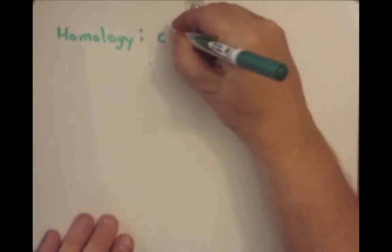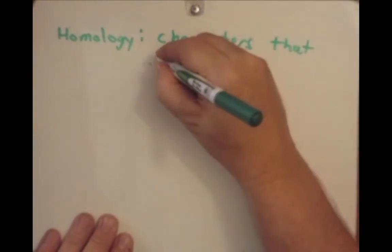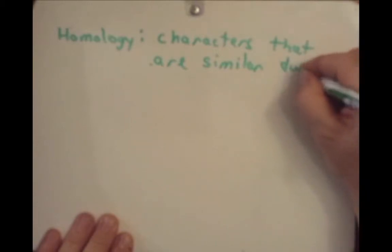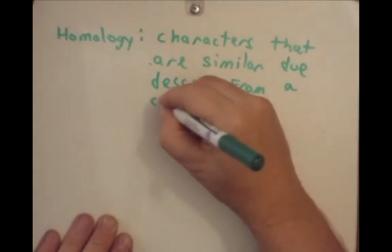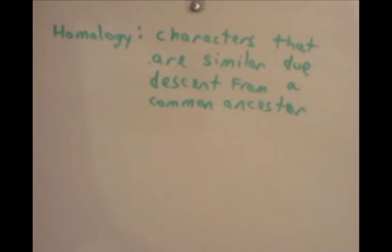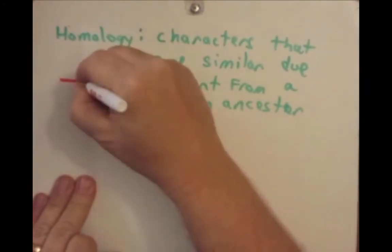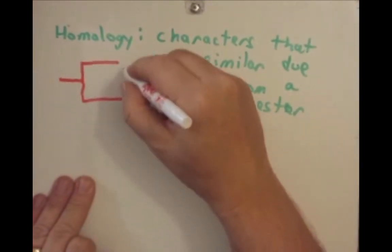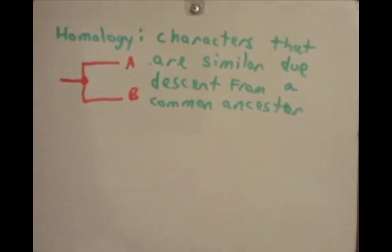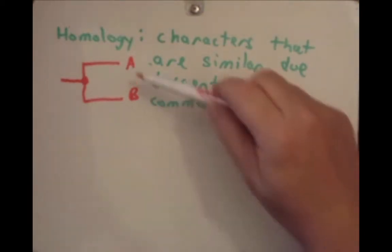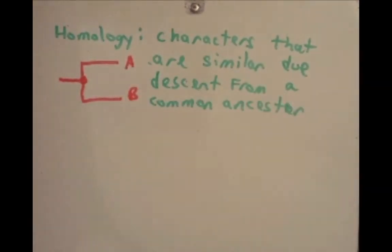Now I want to talk about the terms homology and homoplasy. Homology refers to characters that are similar due to descent from a common ancestor. So in a simple cladogram where both taxa A and B have a similar trait, that would be because of their shared common ancestor. We would say the traits are homologous, and we would also say they are ancestral traits. This can get a bit confusing because some of the words have very similar meanings.